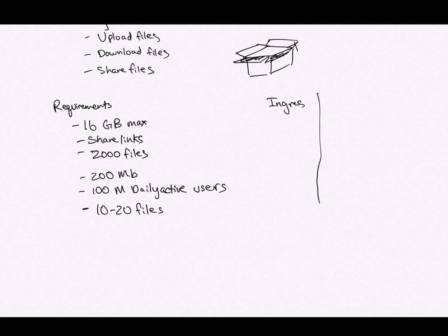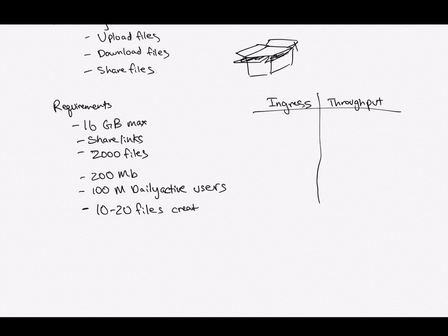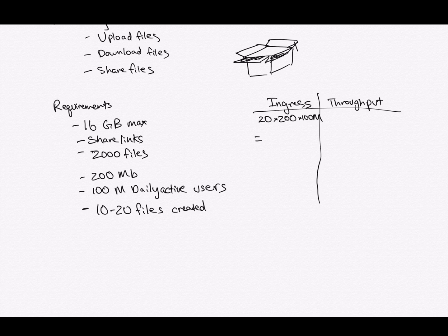The first step is to calculate the ingress and the throughput. Ingress and throughput are just fancy ways of saying data in versus data out. Ingress is incoming data, throughput is exporting data. To do this we're going to have to do some napkin math, taking the number of files multiplied by the number of megabytes by the daily active users to calculate our average ingress per day. We can calculate this as 400,000 million megabytes, which is 400,000,000,000 megabytes.